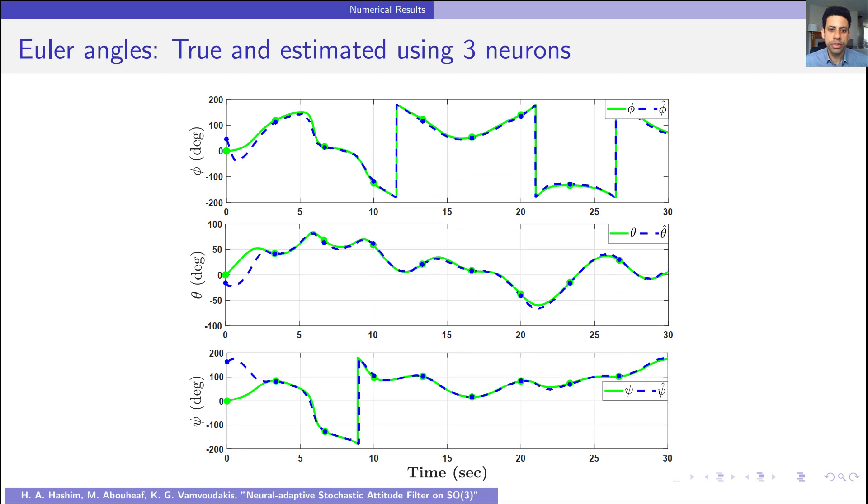This figure shows the estimated Euler angles phi hat, theta hat, and psi hat plotted in blue dashed line against the true Euler angles phi, theta, and psi plotted in green solid line. As we can see, this figure demonstrates fast and strong tracking capability of the proposed approach.